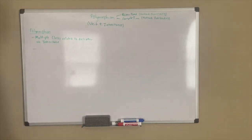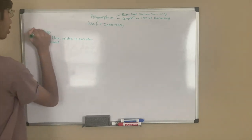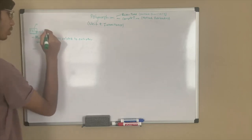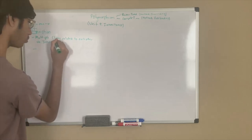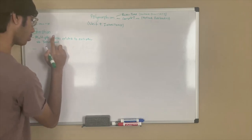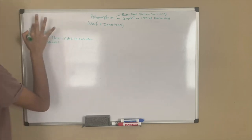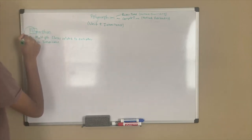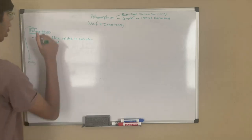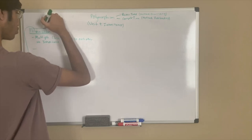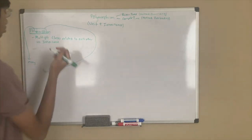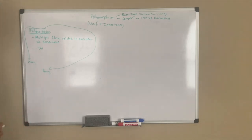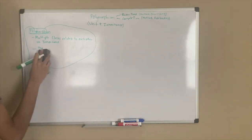Another way to describe polymorphism is in the word itself. The prefix 'poly' just means many, and the prefix 'morph' just means forms. So what does polymorphism mean? Polymorphism just means the ability of an object to be in many forms — an object can undergo many forms.